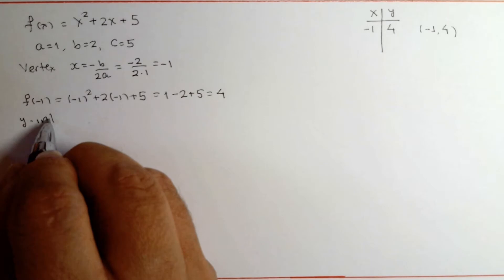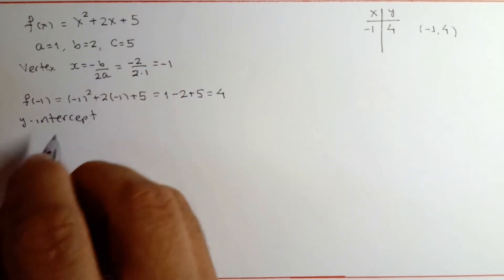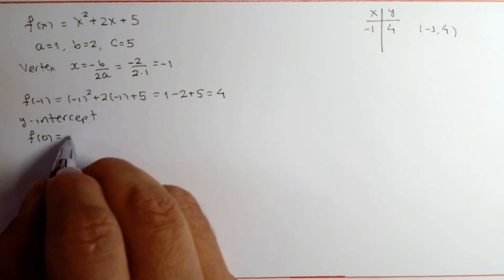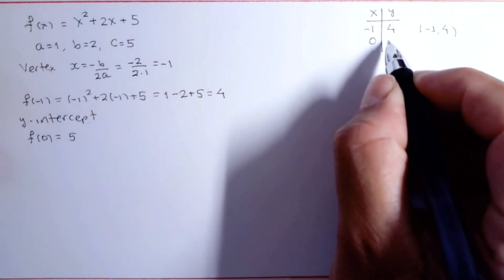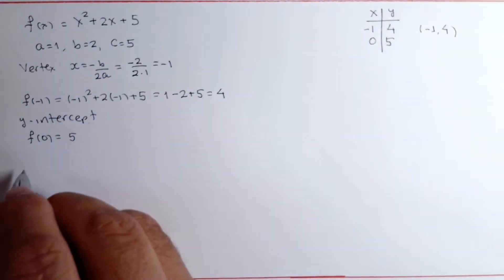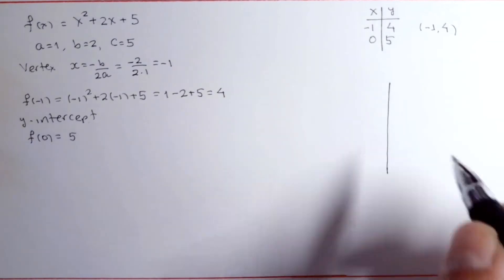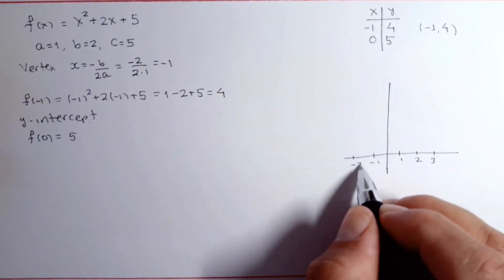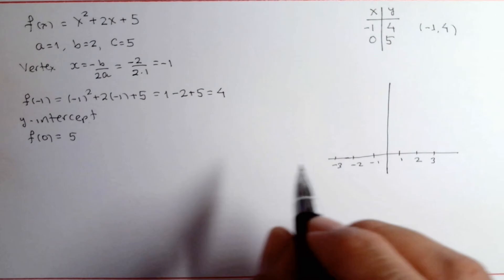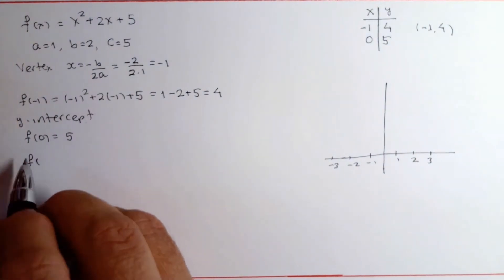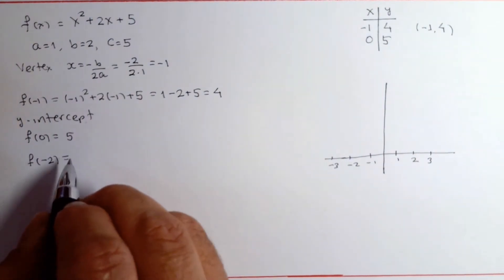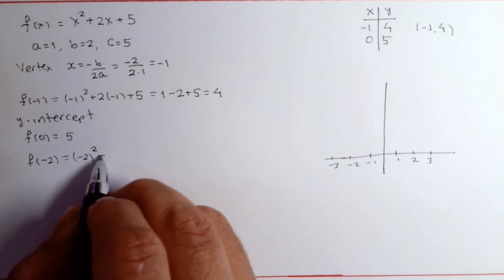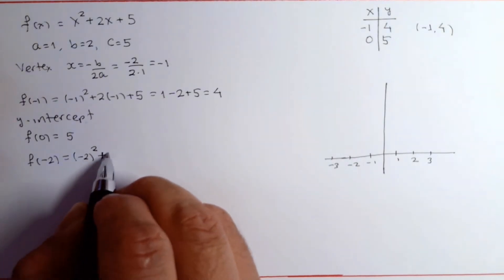We compute the y-intercept by evaluating the function at x equals 0. To finish the graph, we pick values of x a little to the right of the vertex and a little to the left of the vertex.